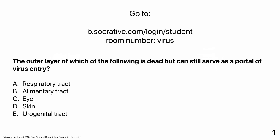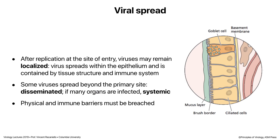The outer layer that is dead but can still serve as a portal of entry is the skin — about 96% of students got that right. If the outer layer of your respiratory or urogenital tract is dead, you have some problems and should see a physician. Mucosal surfaces are so vulnerable because they have a layer of live cells on top of them. Those are the ways that viruses get into us — not a lot, but they're there and they provide a good target.